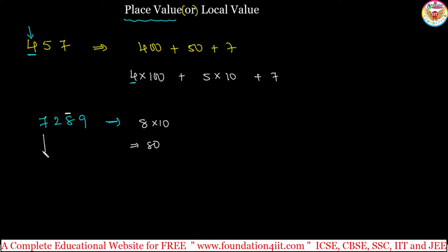Now, the place value of 7. 7 is in which position? Ones, tens, hundreds, thousands. So 7 × 1000, that is 7000. 7000 is the place value of this 7.